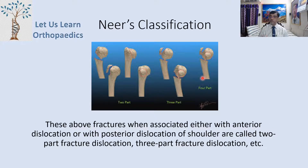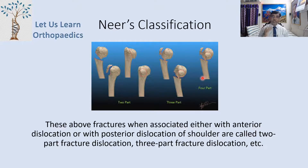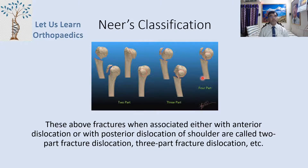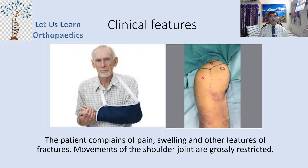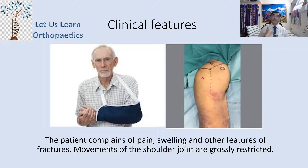When these fractures are associated with either anterior or posterior dislocation of the shoulder, they are called two-part fracture dislocation or three-part fracture dislocation. Clinically, the patient complains of pain, swelling, and other features of fracture. Swelling and ecchymosis are visible and movements of the shoulder joint are grossly restricted.